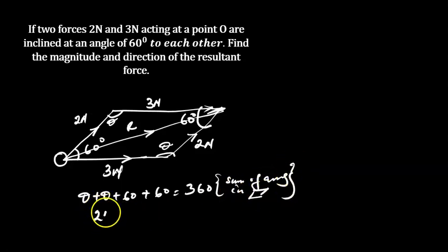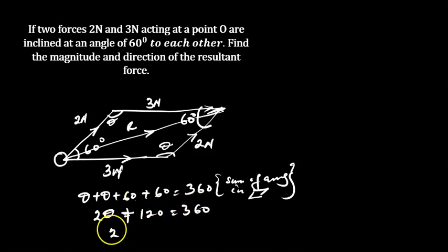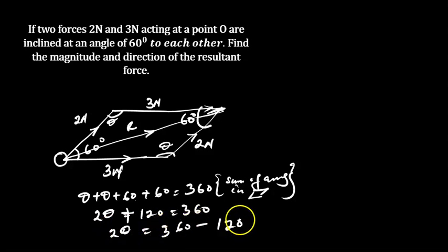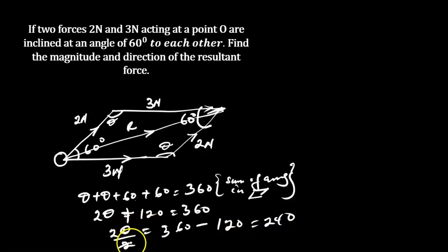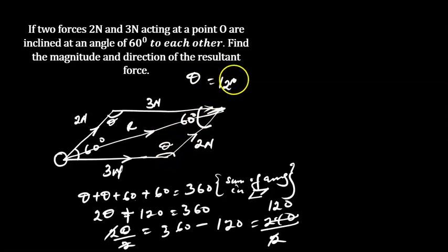So 2 theta plus 120 equals 360. Therefore 2 theta equals 360 minus 120, which equals 240. Dividing both sides by 2, theta equals 120 degrees. So the angle at the top corner of the parallelogram is 120 degrees.